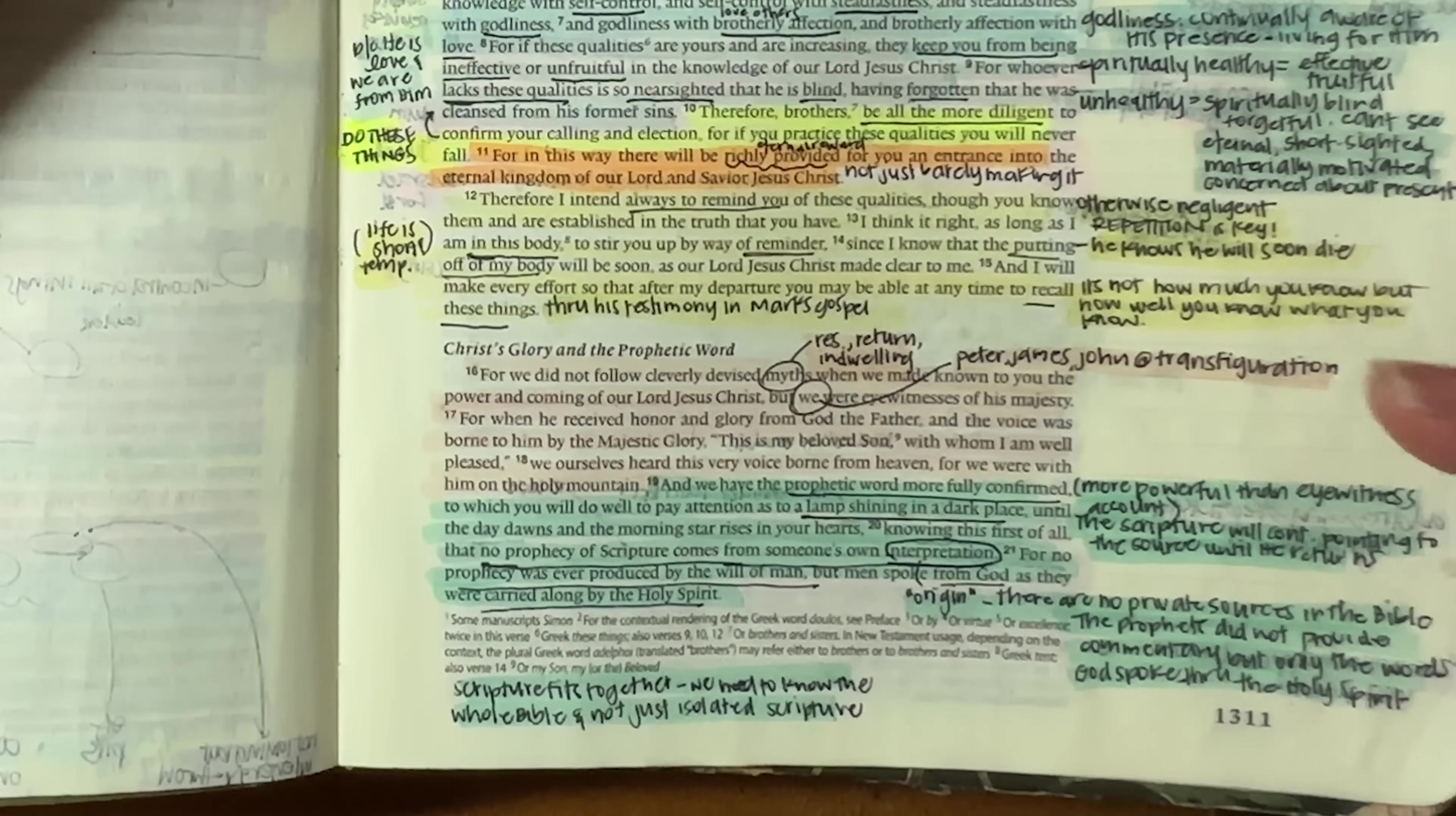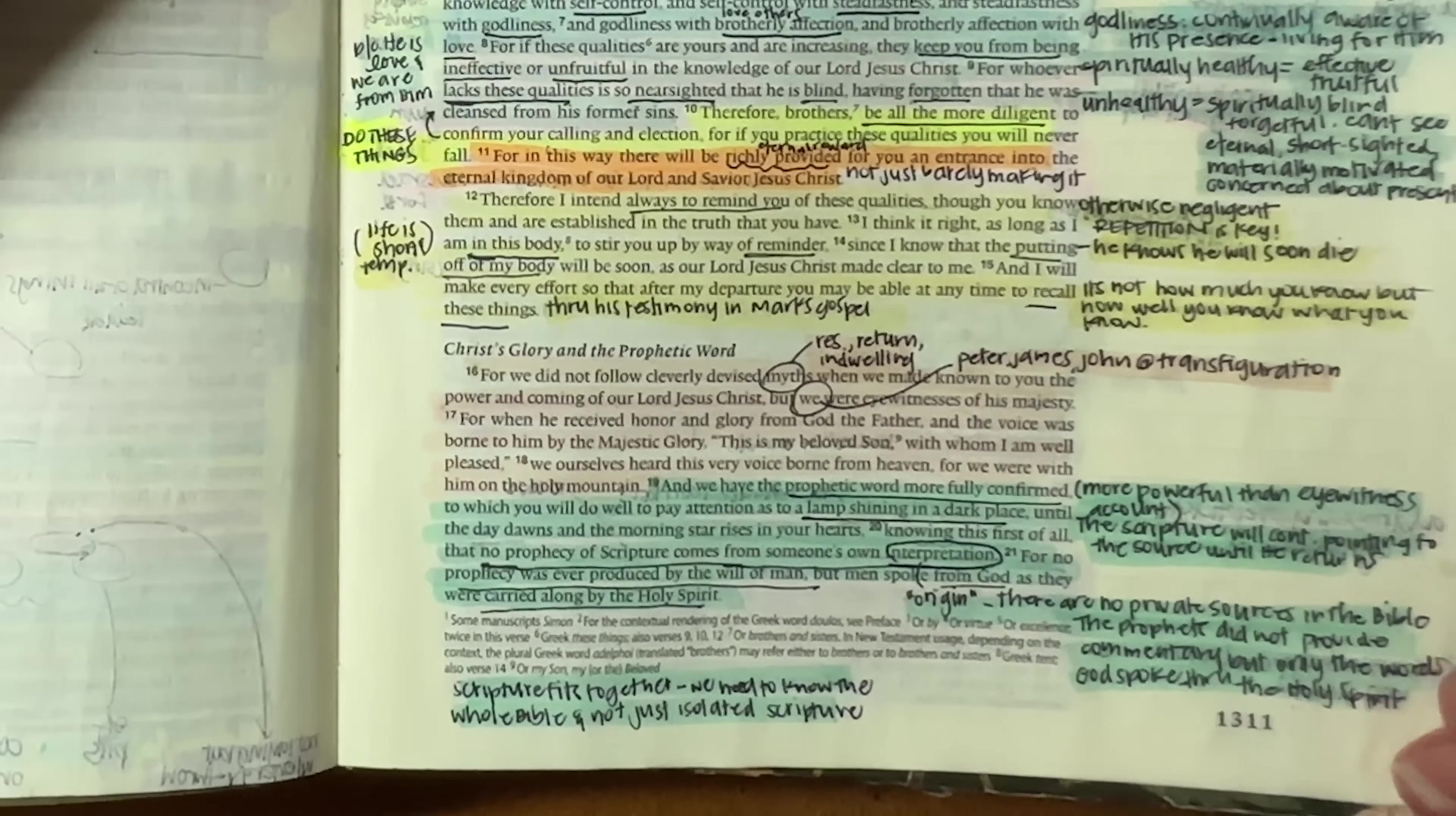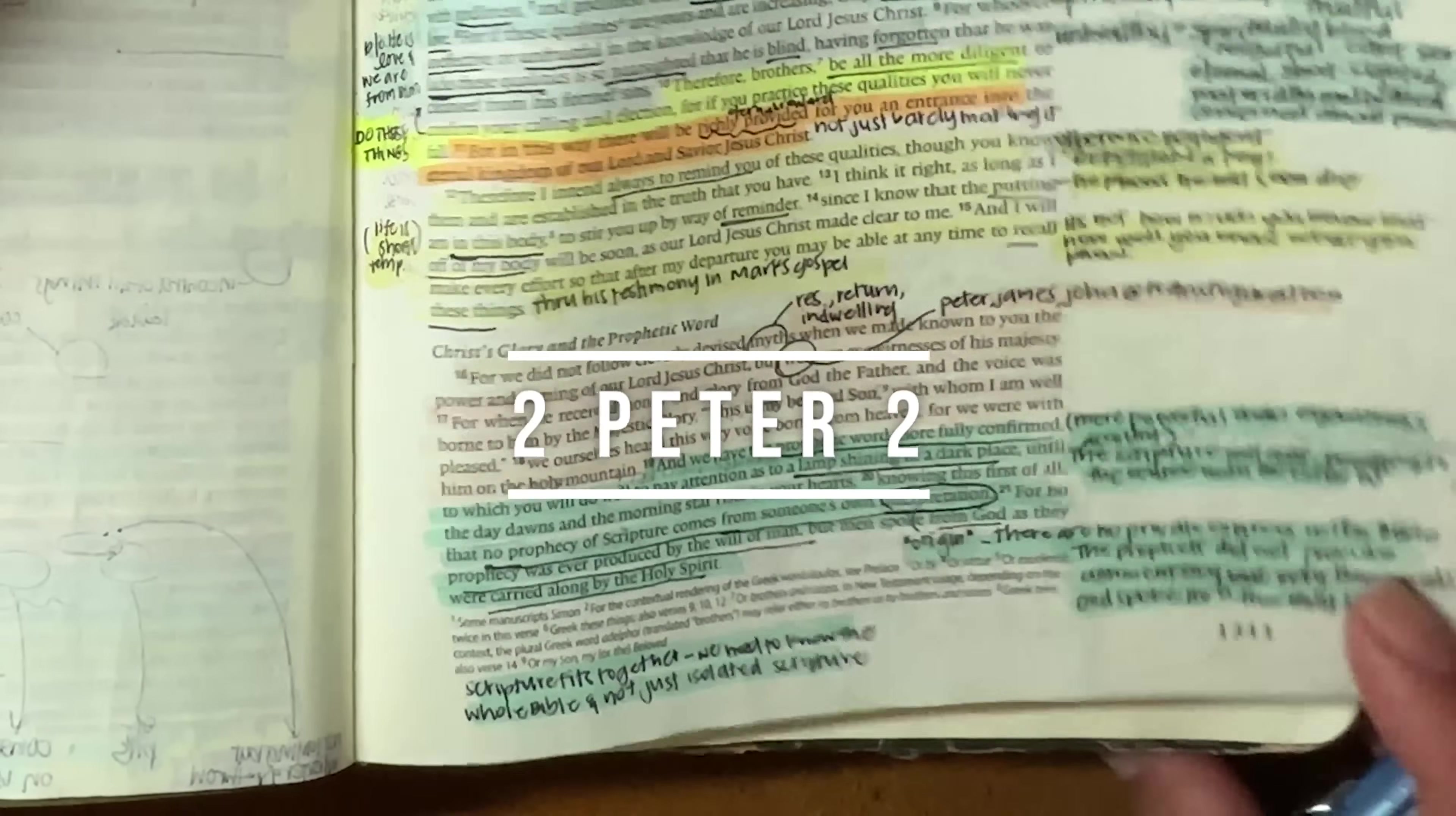And every single one of those prophecies, every single word that God speaks fits together. And that is why we need to know the entire word. Because if you only cherry pick prophecies or scriptures here and there, you're not going to understand how they interlock with other scripture. And when you isolate it, you can so easily twist it to fit your own agenda or your own thoughts. And that is why he's making that point that no prophecy was ever produced by the will of man, but by God. And so we have to know all of these prophetic words and how they fit properly together so we can get the proper understanding of them. I know he's been talking a lot about that lately.